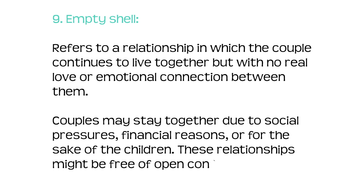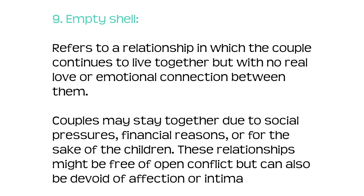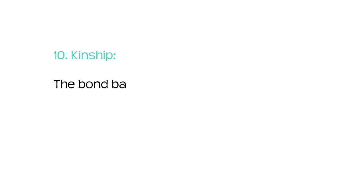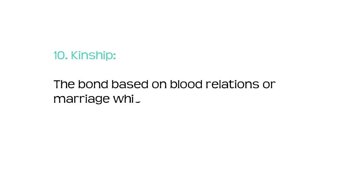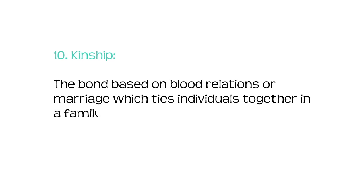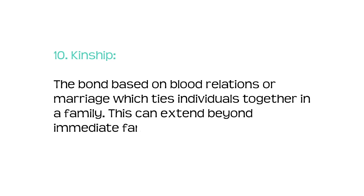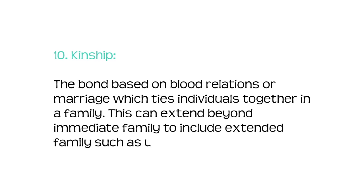These relationships might be free of open conflict but can also be devoid of affection or intimacy. Number ten: kinship. A bond based on blood relations or marriage which ties individuals together in a family. This can extend beyond immediate family to include extended family, such as uncles, aunts, cousins, etc.